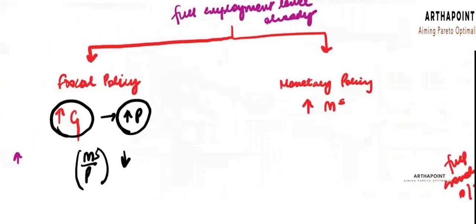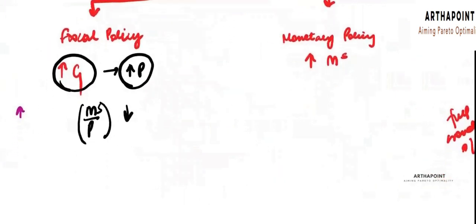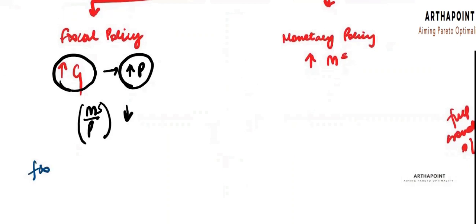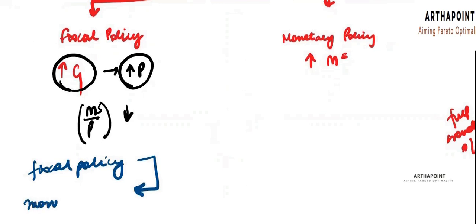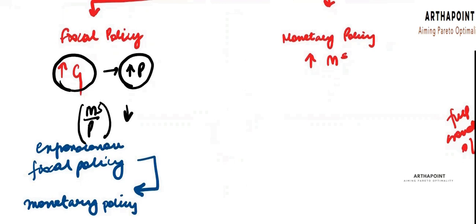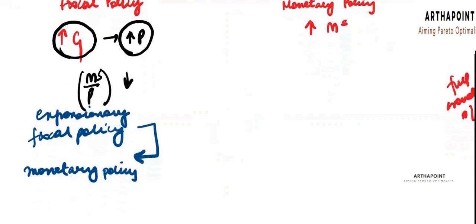So you started with a fiscal policy. Please understand this: you started with a fiscal policy, but this fiscal policy was followed by a corresponding monetary policy. The fiscal policy was expansionary and the monetary policy was contractionary.